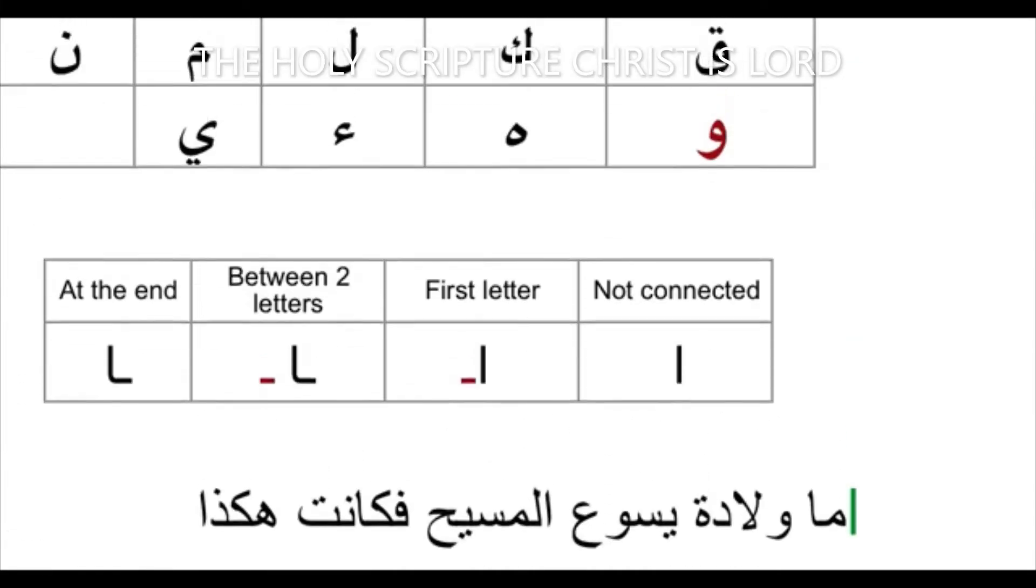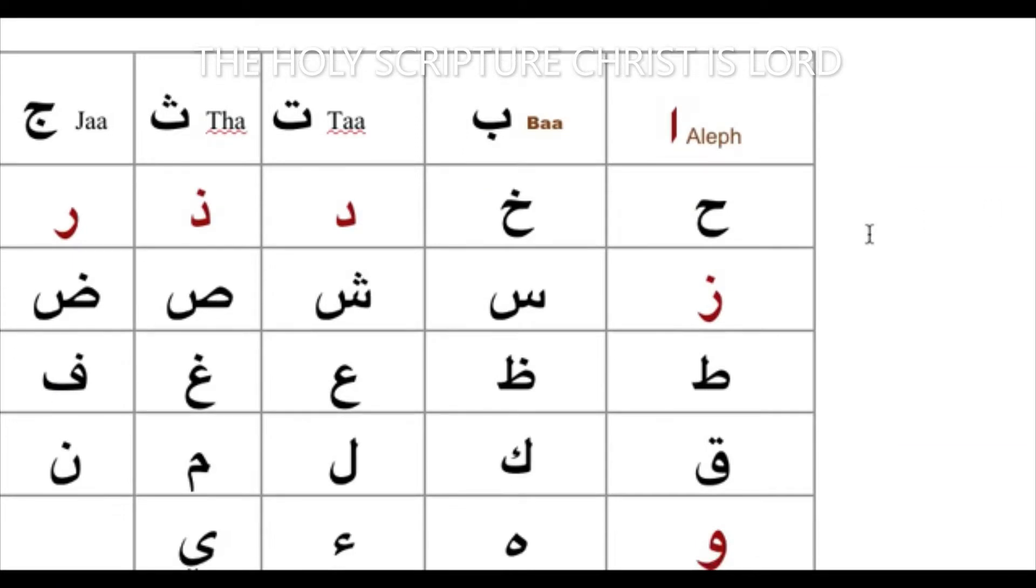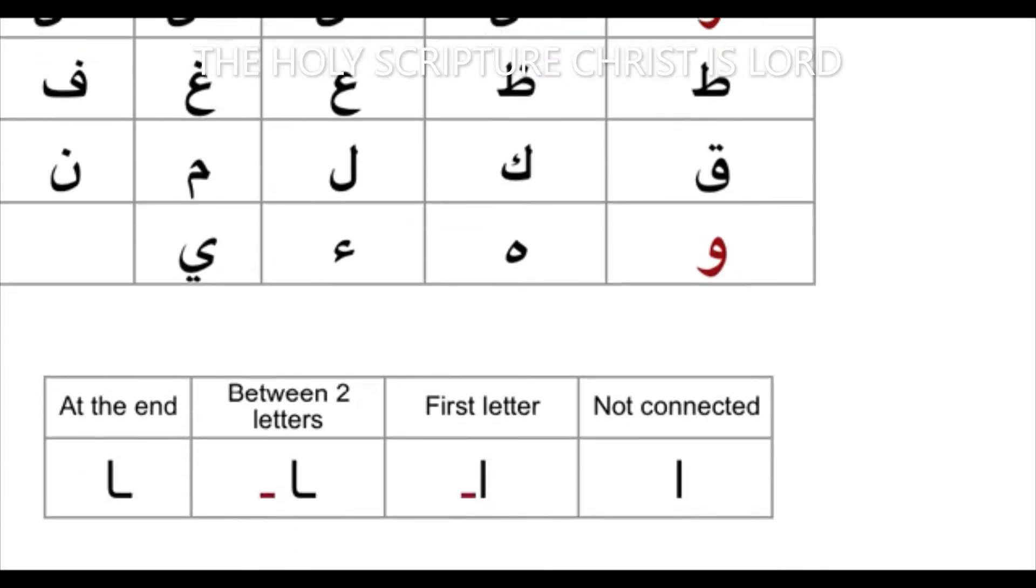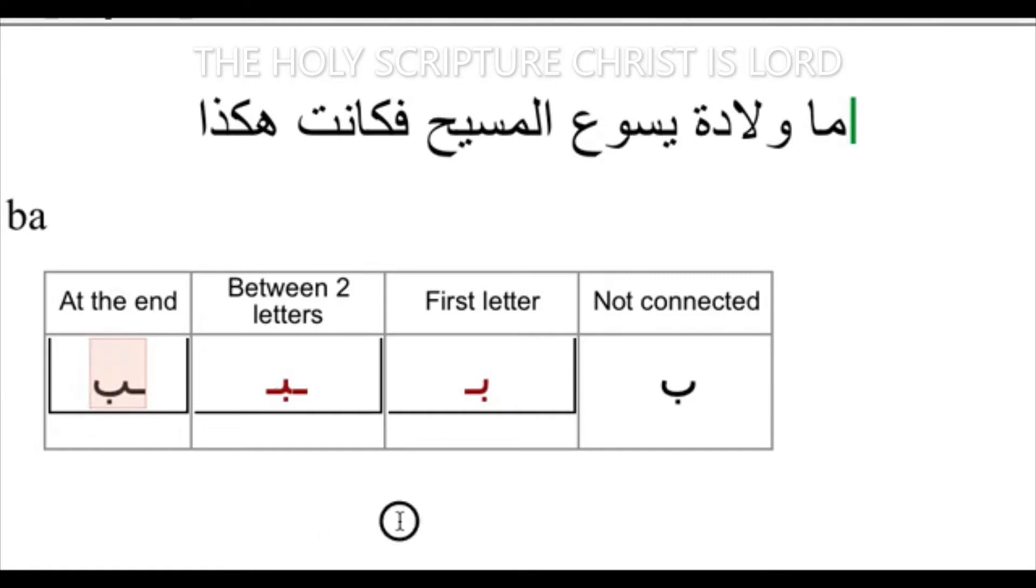Hello everyone, peace of Christ. We continue with our alphabet. In the last class we talked about the letter BA and showed you that this letter can be connected from both directions. This is how it's written in the beginning, in the middle, and at the end.